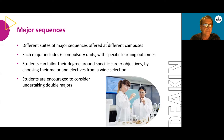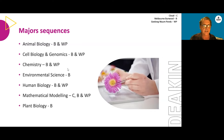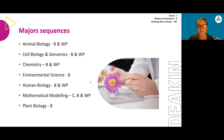The major sequences we offer include four biology majors: animal biology, plant biology, human biology, and cell biology and genomics. In addition, we have a chemistry major, an environmental science major, and a mathematical modelling major. Most majors are offered at both the Burwood campus (B) and the Waurn Ponds campus (WP). The mathematical modelling major also has a cloud offering (C), meaning you can undertake all six compulsory major units entirely online.